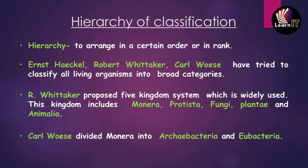Scientists like Ernst Haeckel, Robert Whittaker, and Carl Woese have tried to classify living organisms into different categories. R. Whittaker proposed the five kingdom classification, which is widely used today. The five kingdoms are: Monera, Protista, Fungi, Plantae, and Animalia — and all organisms fall under one of these categories. Carl Woese further divided Monera into two parts: Archaebacteria and Eubacteria.